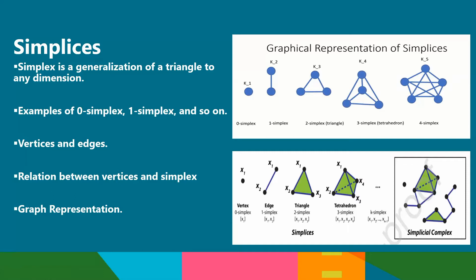To start with, a simplex is a generalization of a triangle to any dimension. For example, a zero-simplex is a point, a one-simplex is a line segment, a two-simplex is a triangle, and a three-simplex is a tetrahedron and so on.